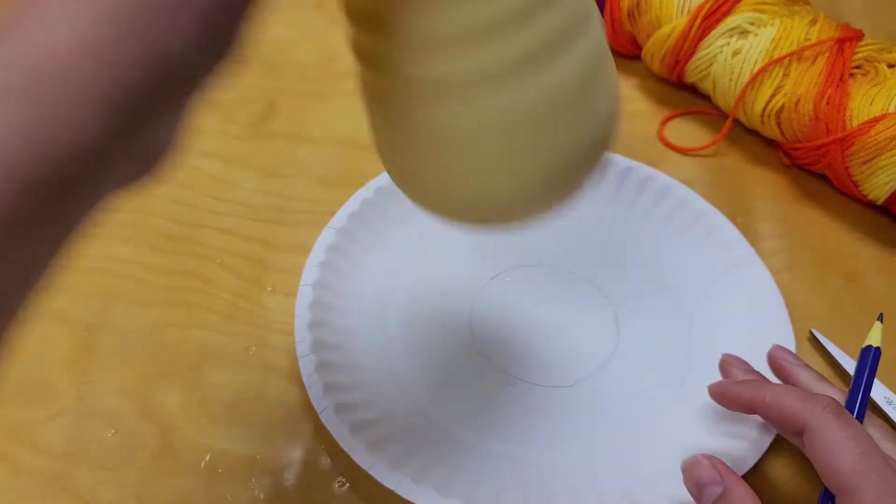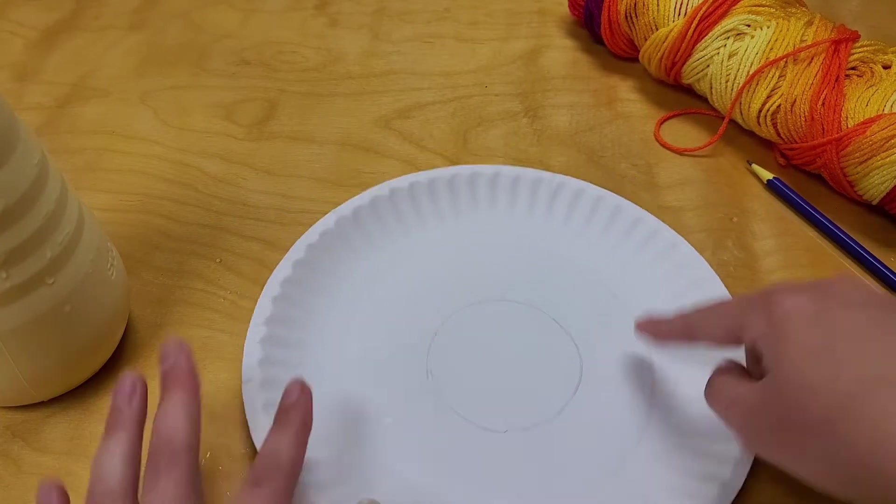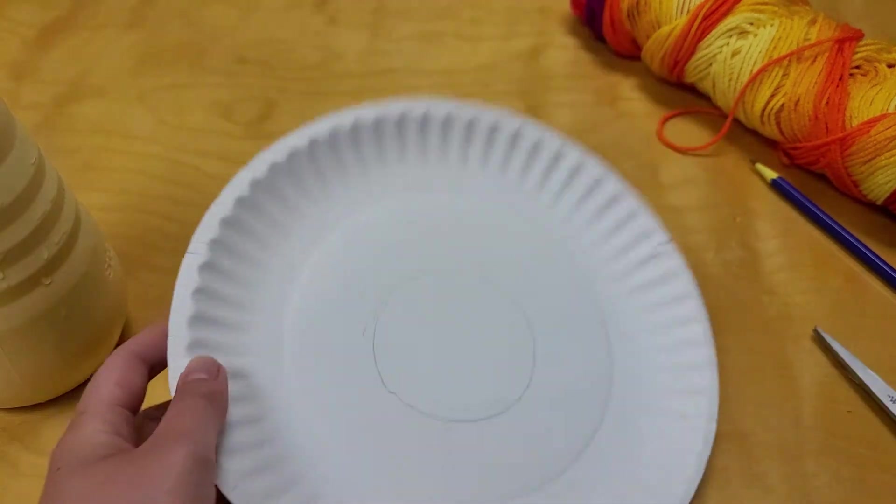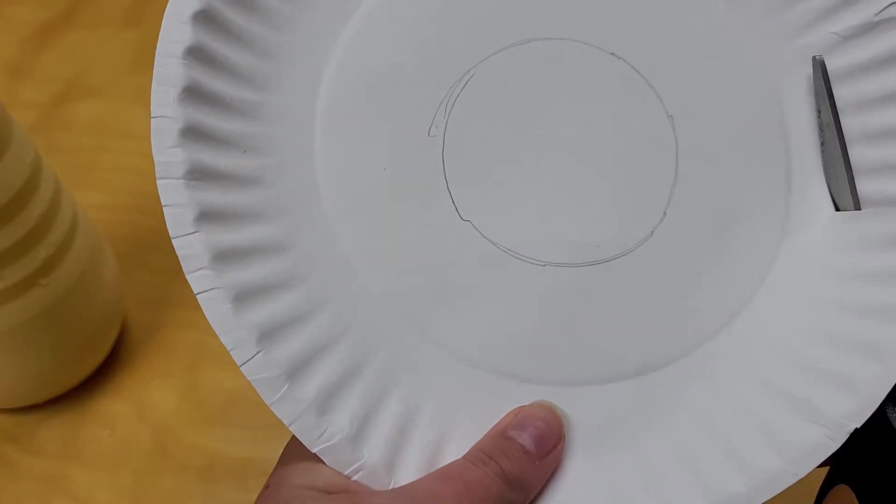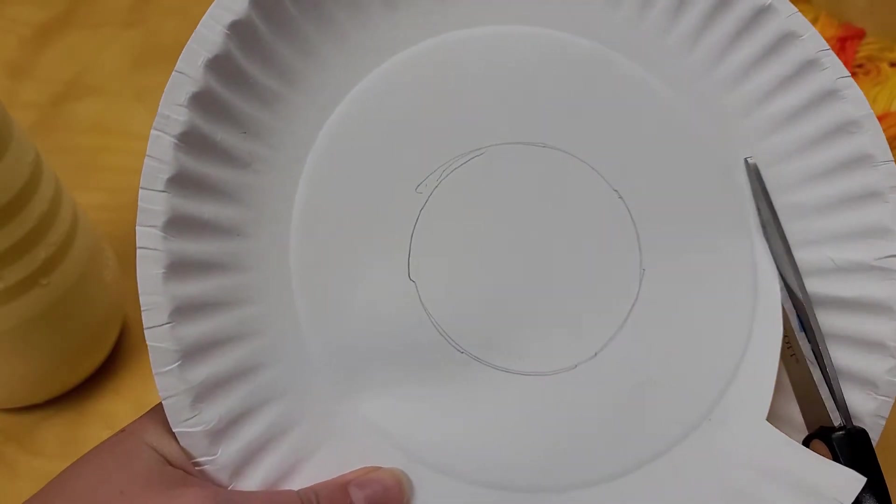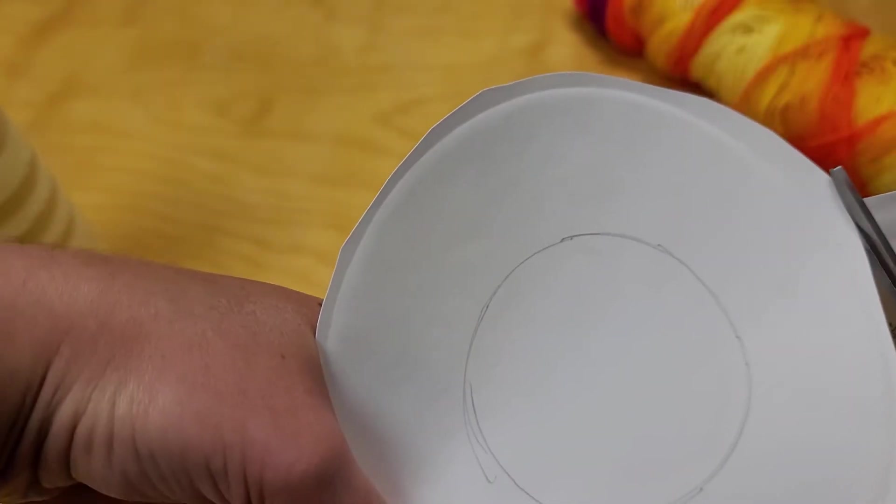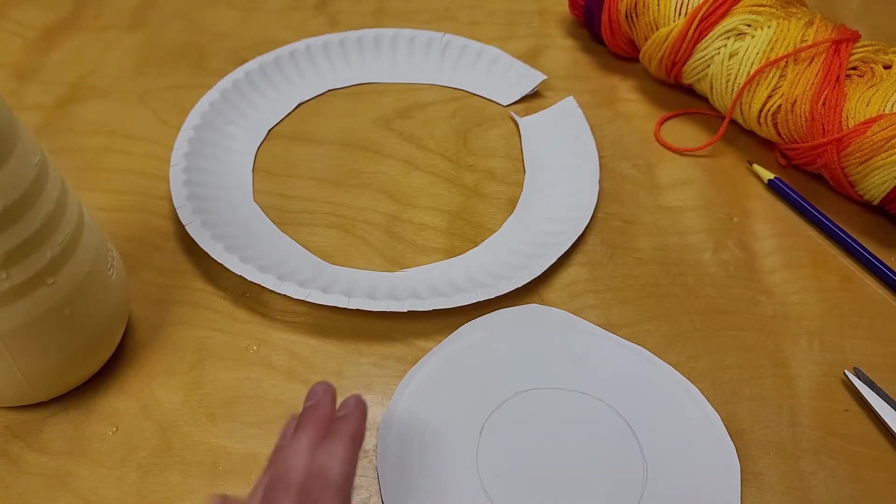Then I'm actually going to cut some of this paper plate out because I only want my basket to be about this big and I don't want a ton of lip. So I'm just going to follow along, and it doesn't have to be perfect.